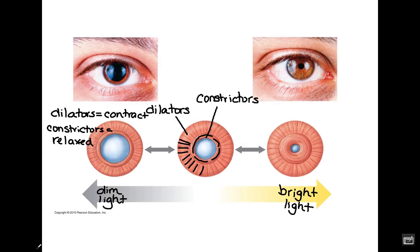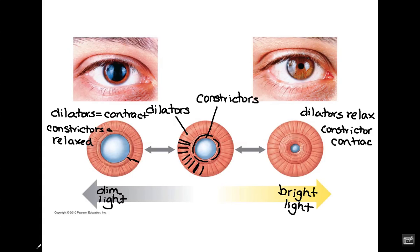When the dilators contract, that distance is shorter — literally pulling the constrictors outward away from the center. Because the constrictors are relaxed and stretchy, they can open the pupil very wide. In bright light, the dilators are relaxed and lengthen, taking up more space, while the constrictors contract and thicken, creating the smaller pupil opening.